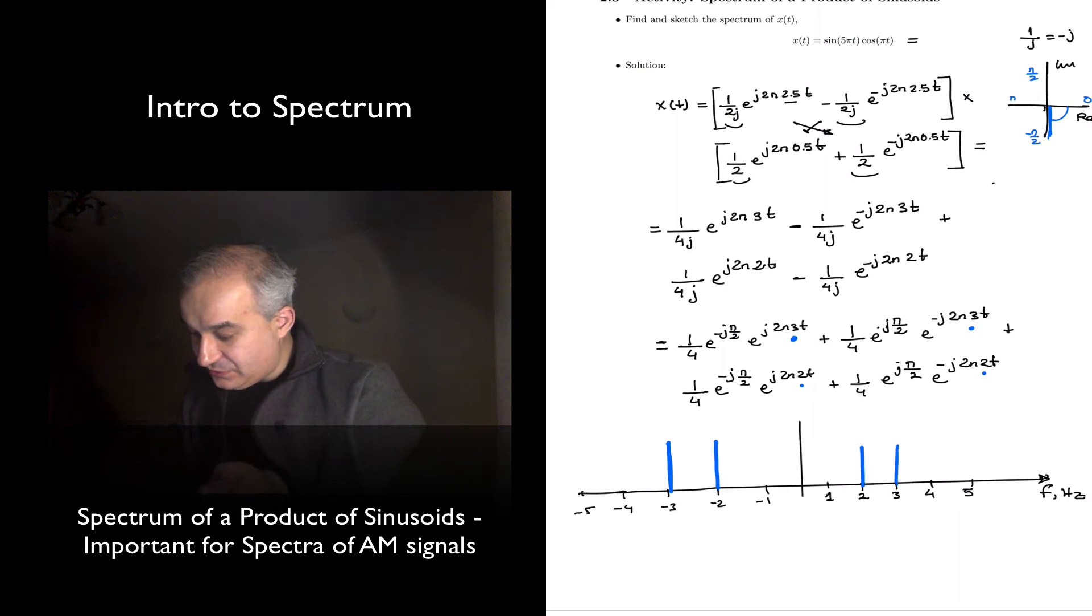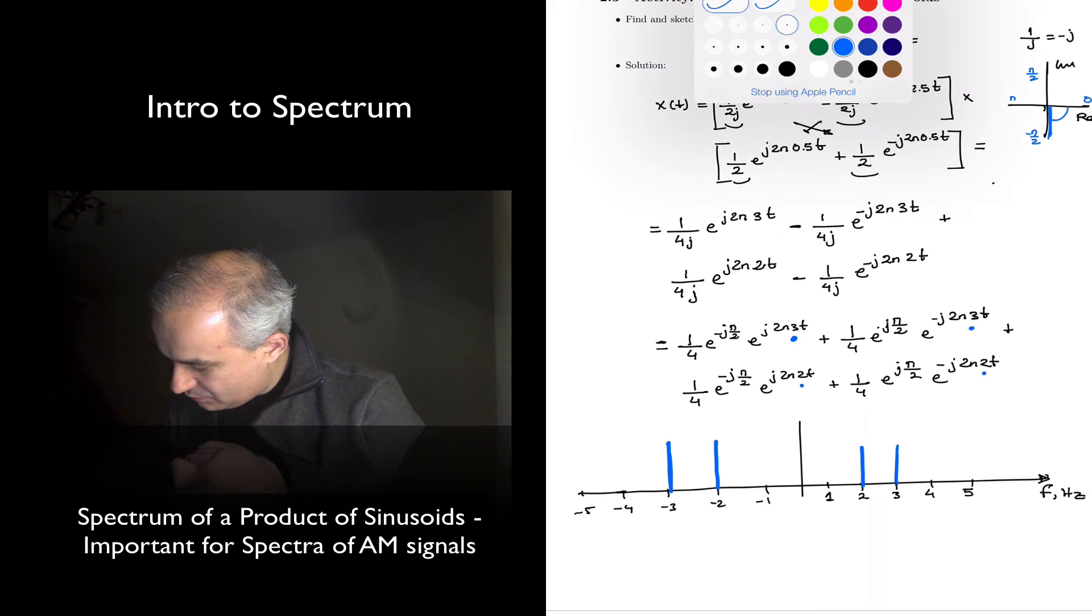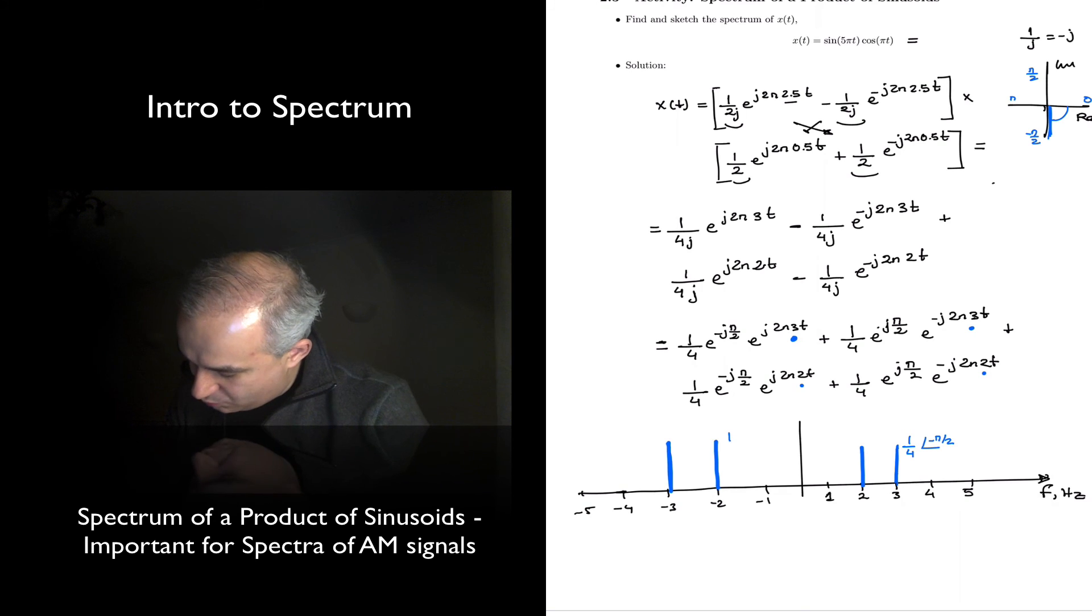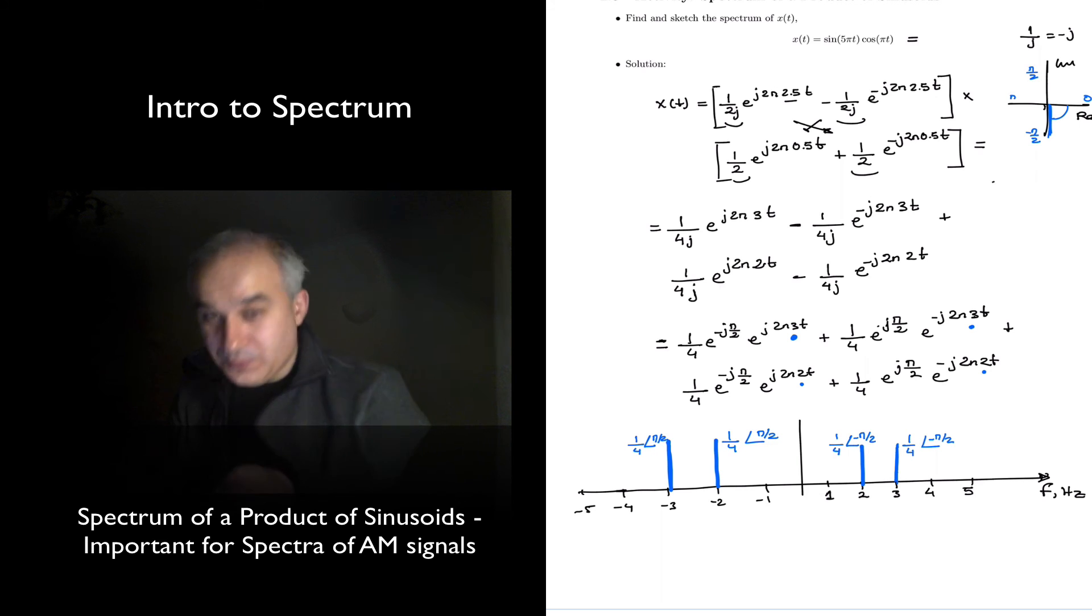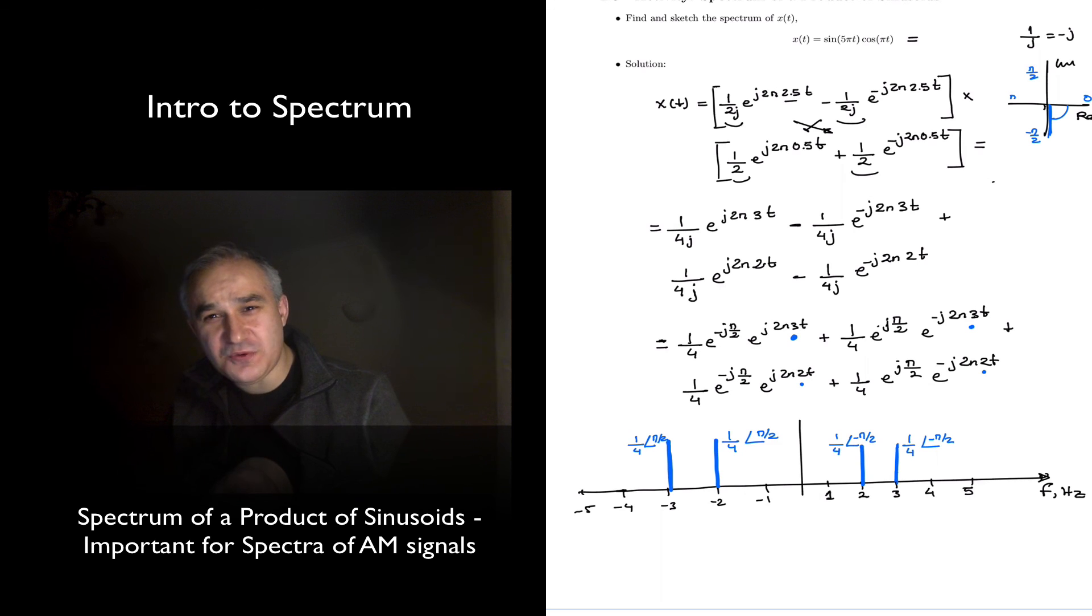Now we also have the amplitudes of each one of those, so let's write them down. 1 fourth with an angle of minus pi 2, and 1 fourth with an angle of pi 2, and 1 fourth with an angle of minus pi 2, and 1 fourth with an angle of pi over 2. So let's write them down, without having to use the Fourier series integral.